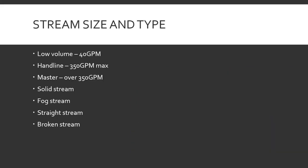Stream size and type: low volume streams max out at 40 gallons per minute. That's like real small wildland hose or maybe a booster reel, real small diameter hose. One person can pretty easily handle it. Good for wildland, maybe some smoldering trash, just soaking something down real quick.